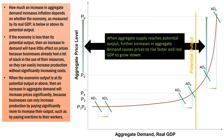An increase in aggregate demand will only increase inflation if the economy is above its potential output. Potential output is what the economy can produce when its resources are used at normal rates — considered the maximum sustainable output. If the economy is less than its potential output, then an increase in demand will have little effect on prices, because businesses already have a lot of slack in their use of resources and can easily increase production without significantly increasing costs. However, when economic output is above potential output, then an increase in aggregate demand will increase prices significantly because businesses can only increase production by paying significantly more, such as paying overtime to their workers.